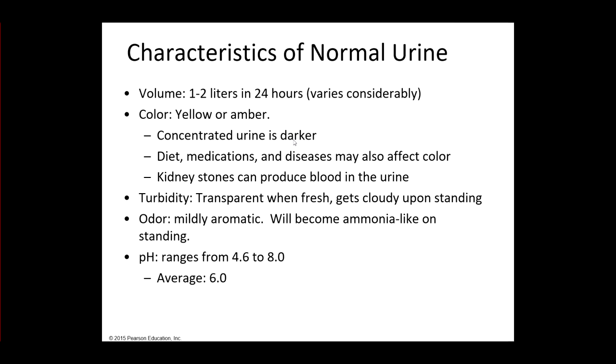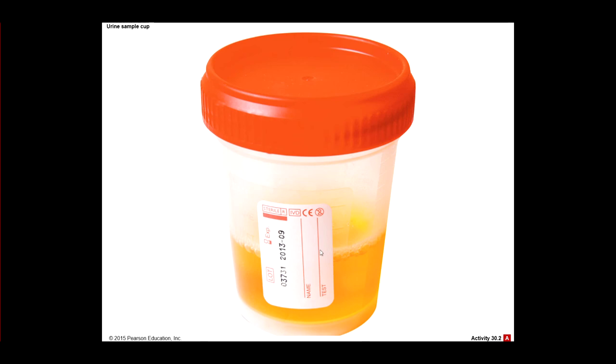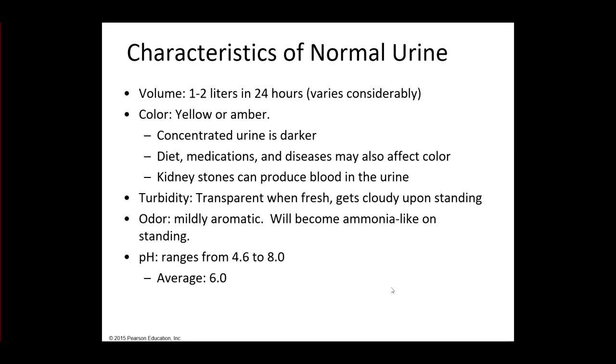As you see different patients, as you come into contact with different people, you'll see that diet, medications, and even diseases can affect the color of urine. Things that are traumatic like kidney stones, sometimes they're sharp or they're gravelly. They can cause bleeding and that can put blood into the urine even. Now normally when you look at urine in one of these cups and you were to hold it up to the light, if it was a clear cup, you would be able to look through the urine. It would be clear.